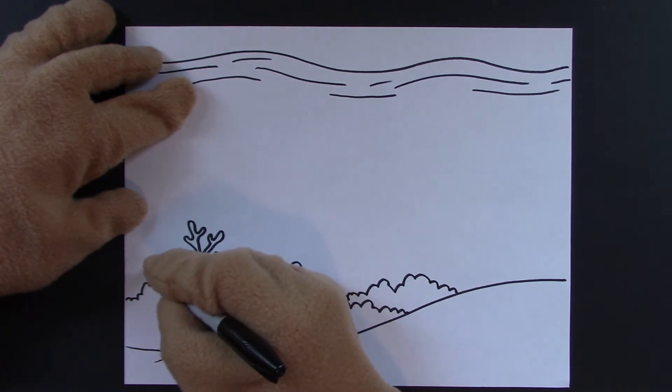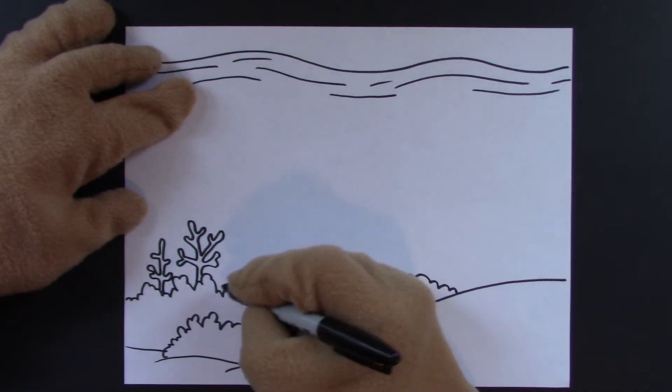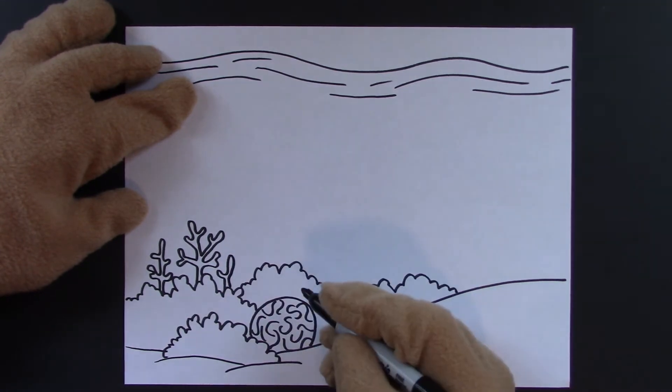And let's do a little one over here on this side. This one's a little straighter. And then a very small one over here. It's just two branches.